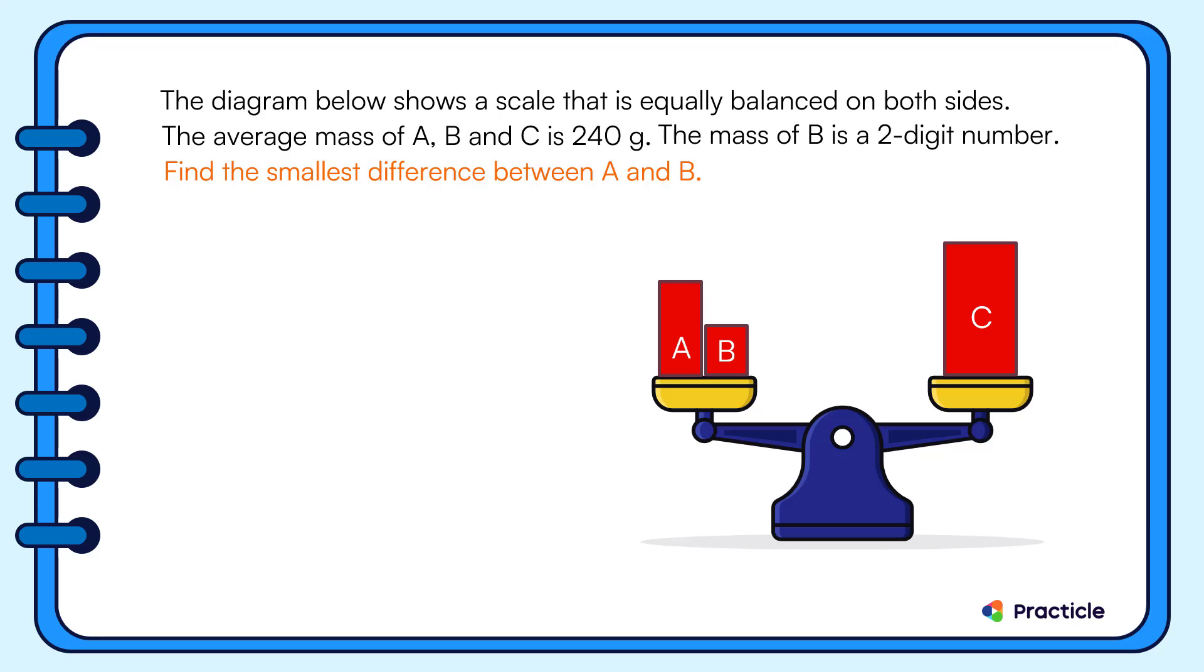Well, the best that we can do now is to find the total mass of A, B and C, so that we have something useful to work with. Since we have the average mass of A, B and C, let's multiply it by 3. And now we know that A, B and C have a total mass of 720 grams all together. Great!